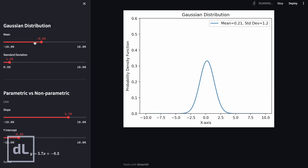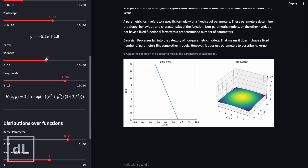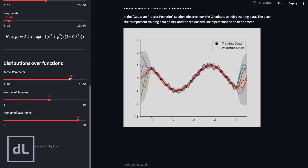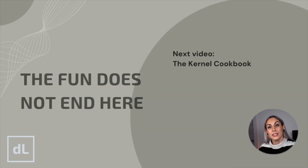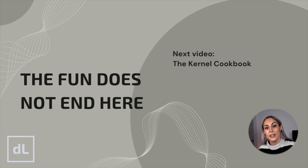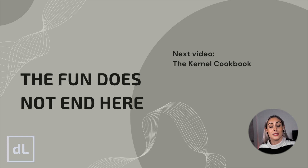And this is all for this first video of the series. You can continue exploring Gaussian processes on the Streamlit app in the resources section by playing around with the different parameters. In the next video of this series — the kernel cookbook — we will explore how different kernels define the similarity between data points, discussing their definitions, interpretations, and the impact of hyperparameters. We will also talk about kernel manipulation and combination techniques, such as adding and multiplying kernels to capture different aspects of the data.